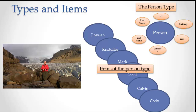So an item of information is one complete filled-out type. The type is like a template — it's fill in the blanks — but without the blanks filled in there's really nothing there.